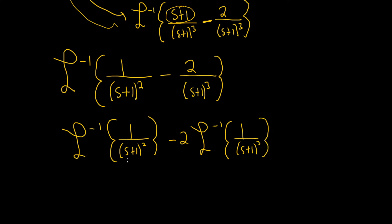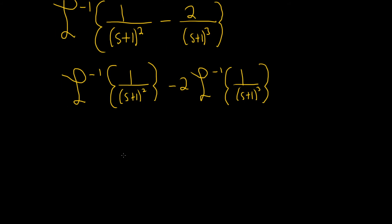And the problem is that it's s plus 1. We can deal with it if it's just s to a power. So let's make them both s to a power by doing the following. Inverse Laplace of. So we want the bottom one to be s squared. So we'll do a shift from s to s plus 1.